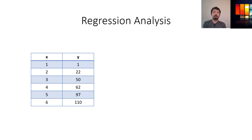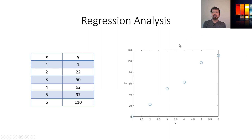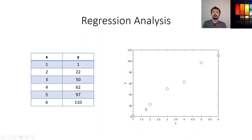It might be a temperature or time. Now, if we plot these x and y values in a figure, it looks something like this, where x is on the x-axis and y is on the y-axis, plotted as points. The question becomes: is there any equation or function that can be defined to represent all these points as close as possible? That is called regression analysis.